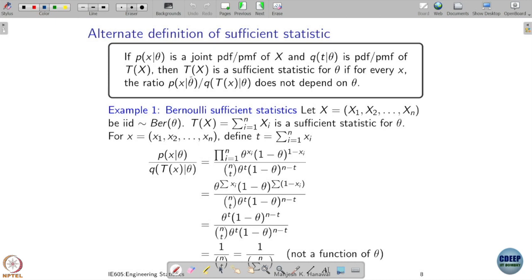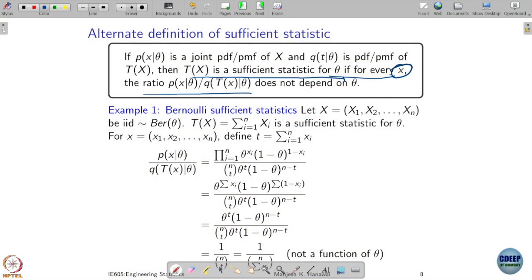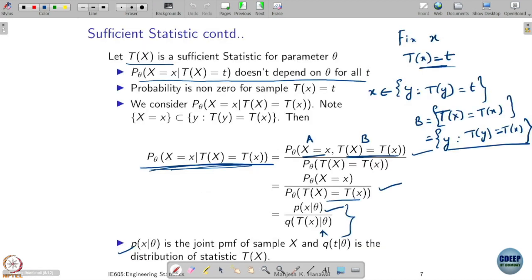t(x) is a sufficient statistic for theta if, for every x, this ratio p(x|θ) divided by q(t|θ) does not depend on theta. Notice that this ratio has to be independent of theta for every possible x — it's not that if you show it for one x you are done. This should not depend on which x you are considering.